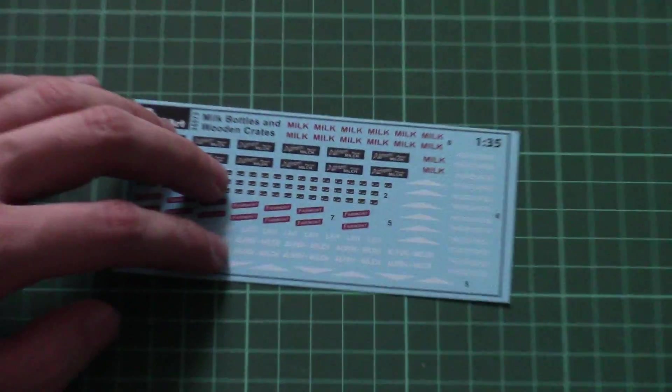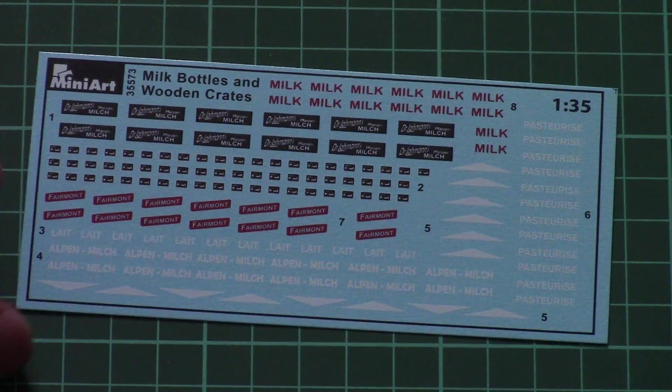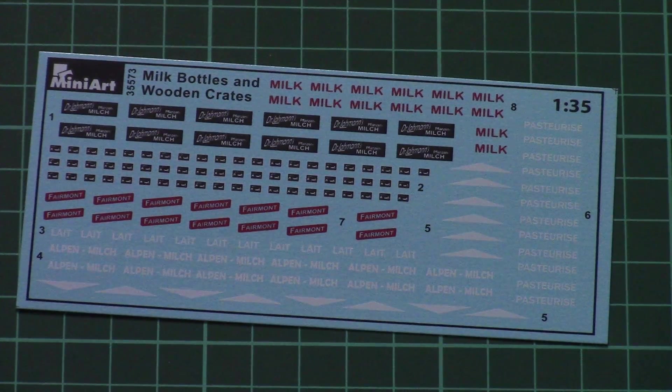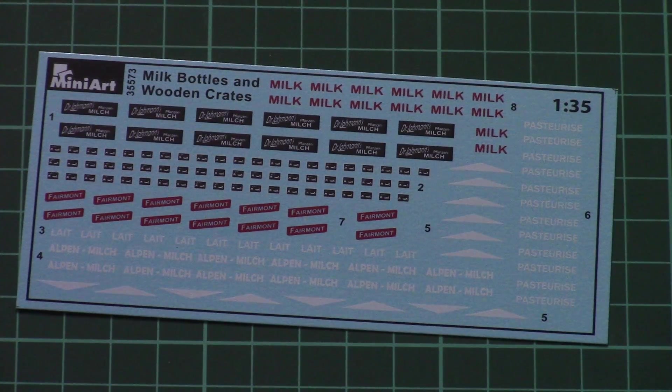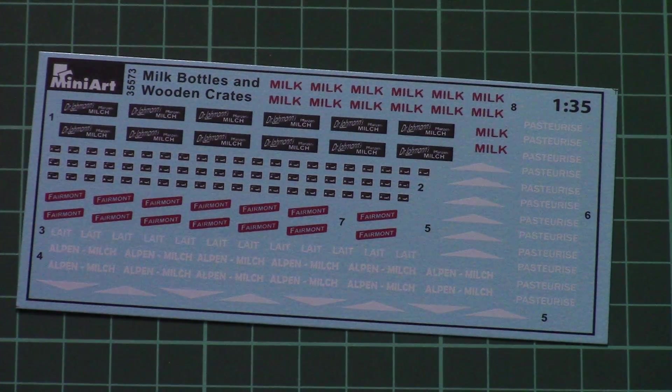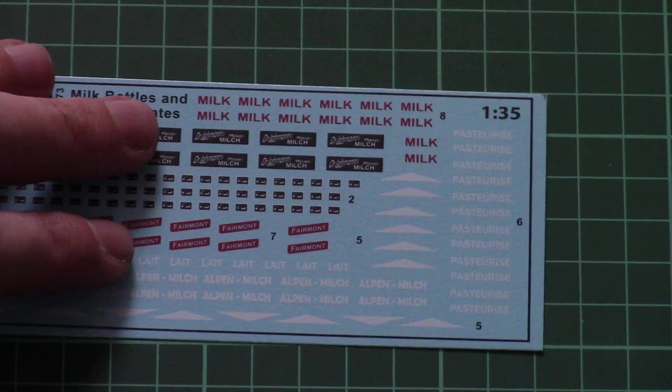I will zoom a bit so that you can check it closer. Here we have all tags for milk bottles and for the boxes. Printing quality is really good and MiniArt decals should be easy to apply, so no worries.